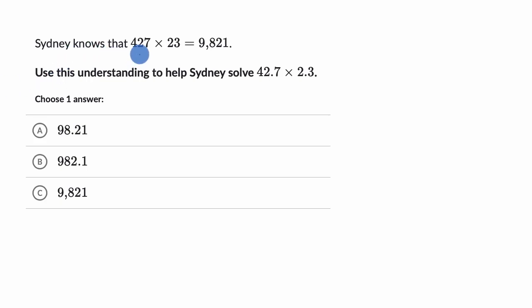We're told that Sidney knows that 427 times 23 is equal to 9,821. Use this understanding to help Sidney solve 42.7 times 2.3. So pause this video and think about what you think it's going to be.